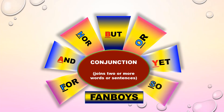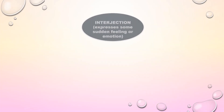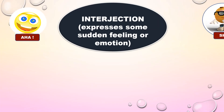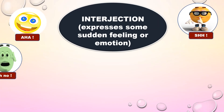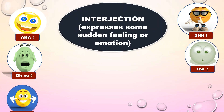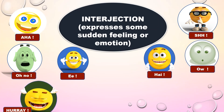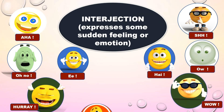Now let us see interjection. An interjection is a word which expresses some sudden feeling or emotion. Some examples for interjection are: aha, shh, oh no, woe, ee, hi, hooray, wow, alas, hey.